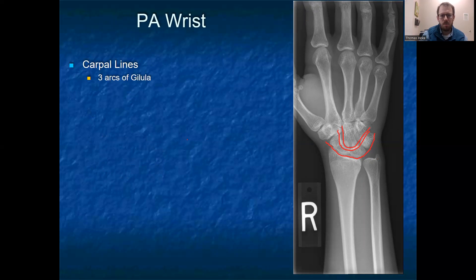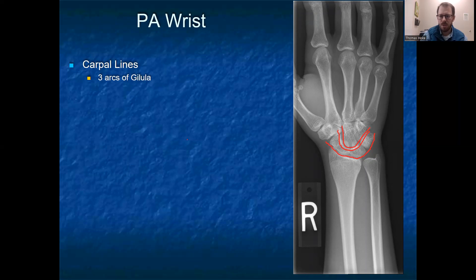One more thing to look at on the PA of the wrist are the three carpal lines, or the three arcs of Gilula. The first arc is the most proximal row — the scaphoid, lunate, and triquetrum. Distally, you should see a concavity of these same three bones. Any disruption suggests dislocations, fractures, or anatomic variations. The third or most distal arc is the capitate and the hamate.